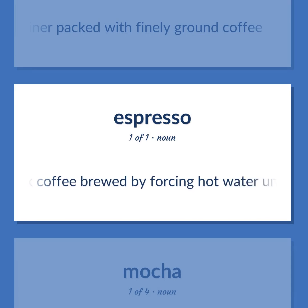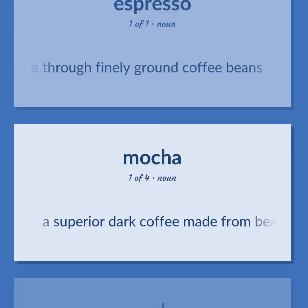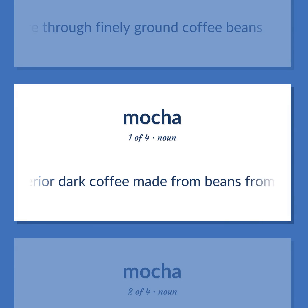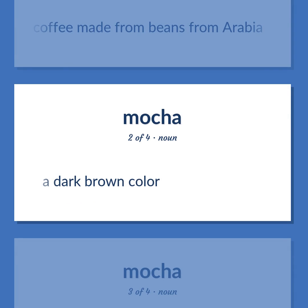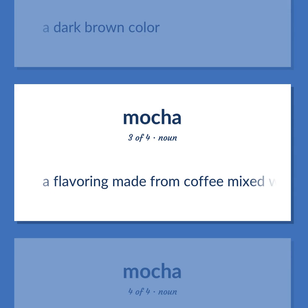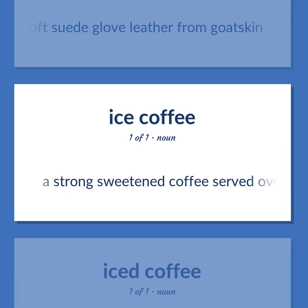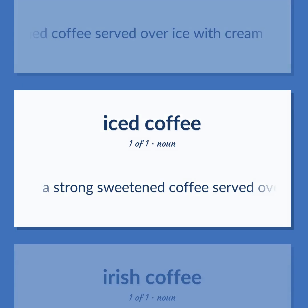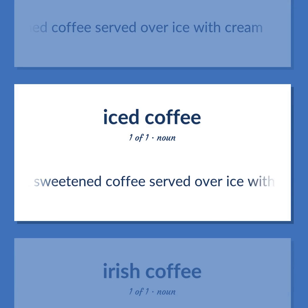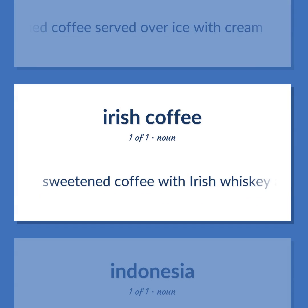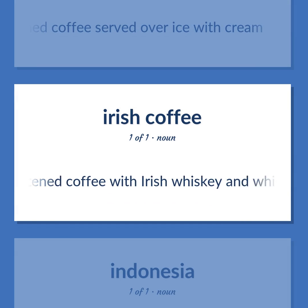Espresso: strong black coffee brewed by forcing hot water under pressure through finely ground coffee beans. Mocha: a dark brown color; also a flavoring made from coffee mixed with chocolate; also soft suede glove leather from goatskin. Iced coffee: a strong sweetened coffee served over ice with cream. Irish coffee: sweetened coffee with Irish whiskey and whipped cream.